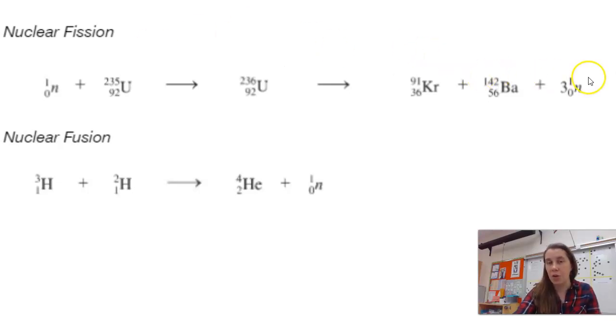Another characteristic of fission is that we always get extra neutrons, and those neutrons can then cause another fission reaction to happen by becoming the reactant for a different uranium atom.